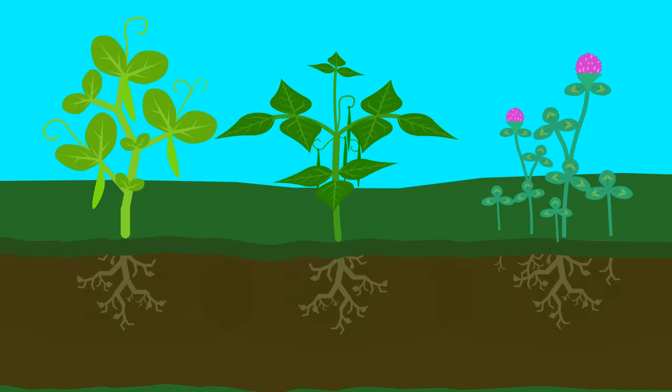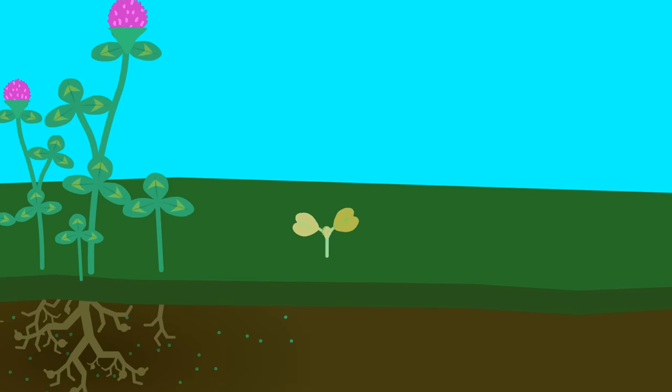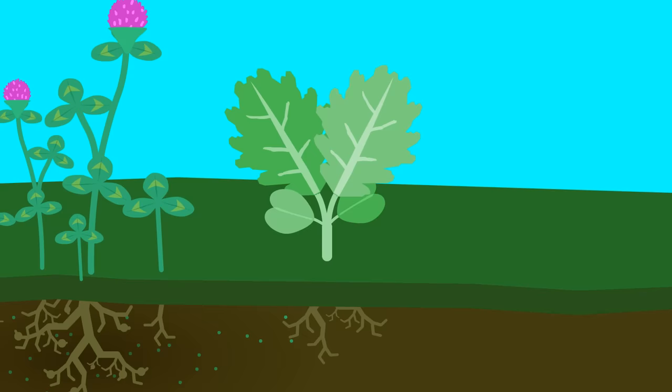They increase the level of nitrogen in the soil, which plants need to produce protein so they can grow, and chlorophyll so they can photosynthesize.